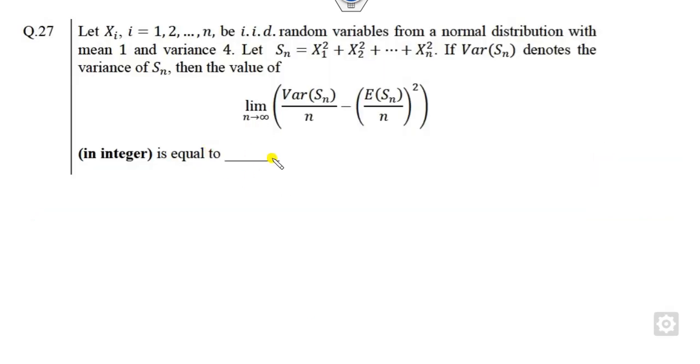Let's start with this question. Firstly, we will try to read this question. XI's will follow the normal distribution whose mean is 1 and variance is 4, and it is given to you IID. And SN is given to be here and you have to find this. We will try to find the expected value of this.